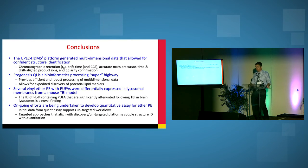So in conclusion, the UPLC HDMS platform generated multi-dimensional data that allowed for confident structure identification. Progenesis QI is a bioinformatics processing superhighway. It provides us an efficient and robust processing of our multi-dimensional data and allows for expedited discovery of potential lipid markers. We were able to identify several vinyl ether PEs with polyunsaturated fatty acids that were differentially expressed in the lysosomal membranes of the mouse TBI model. And our ongoing efforts are being undertaken to transfer this over to a quantitative assay.